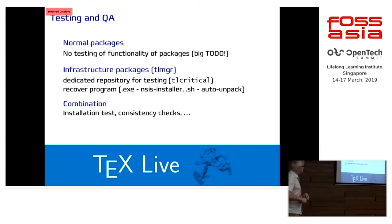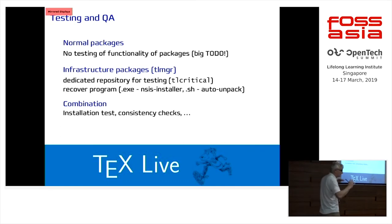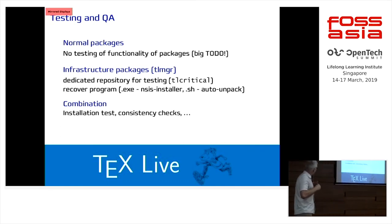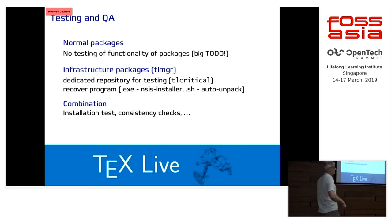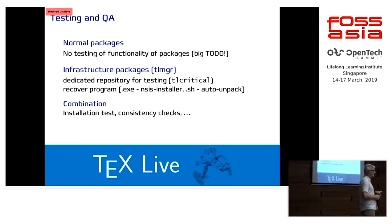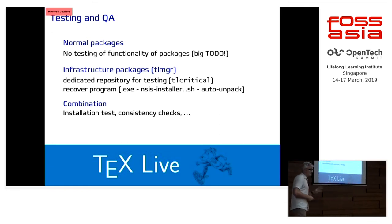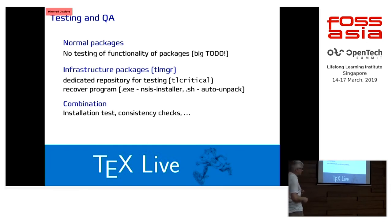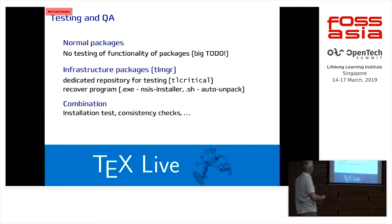The biggest challenge is that for normal packages — like a LaTeX package — we cannot do a lot of automated functional testing. For example, there is a package now stuck in Debian unstable due to a bug. This is actually a big to-do: we want automated functional tests for all TeX packages, but it's a huge endeavor because there is no automated way to test them all. We only check whether they can be installed on the system, not whether the functionality works.